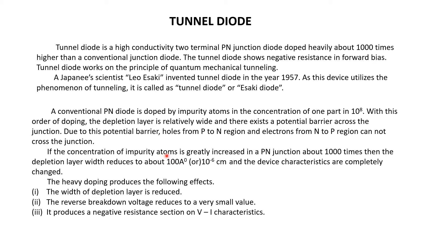Now if the concentration of impurity atoms is greatly increased in PN junction about 1000 times, that means for 10^5 semiconductor atoms 1000 dopants are added.